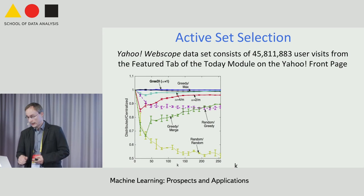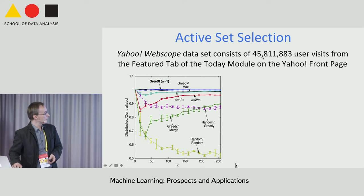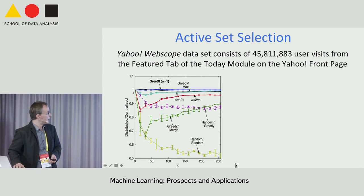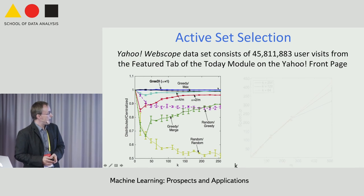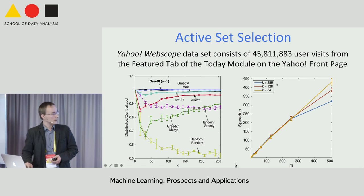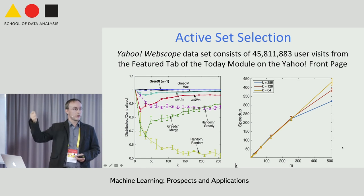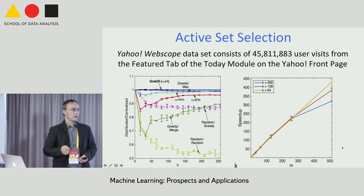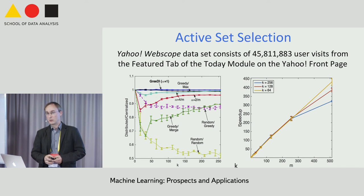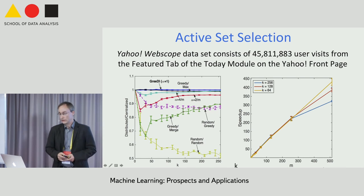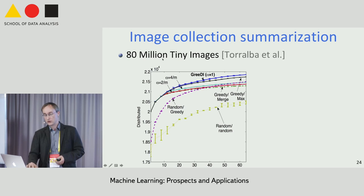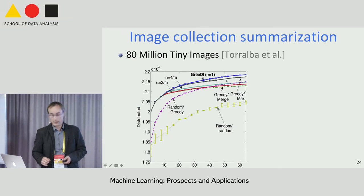Some further experiments: on the same WebScope dataset, we can barely run the centralized greedy algorithm—it takes several hours. Running the parallel algorithm, we get near-linear speedup up to the point where the second stage again faces a problem of similar scale to the first. But for a very large range of machine counts, we achieve almost linear scaling. We also ran it on instances where centralized greedy is infeasible—an image collection summarization example—and it still does much better than the naive baselines.